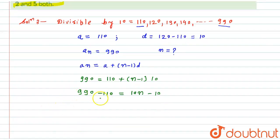I will take this 10 to that side, and ultimately 990 minus 110 will be nothing but 880, and this minus 10 will go to that side, become plus 10 equals 10n.